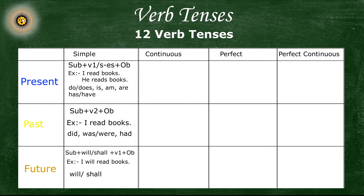First, let's talk about present progressive or present continuous tense. The sentence structure for this tense is: subject plus am/is/are plus first form of the verb with '-ing' plus object. The first form of the verb with '-ing' is also known as the present participle.